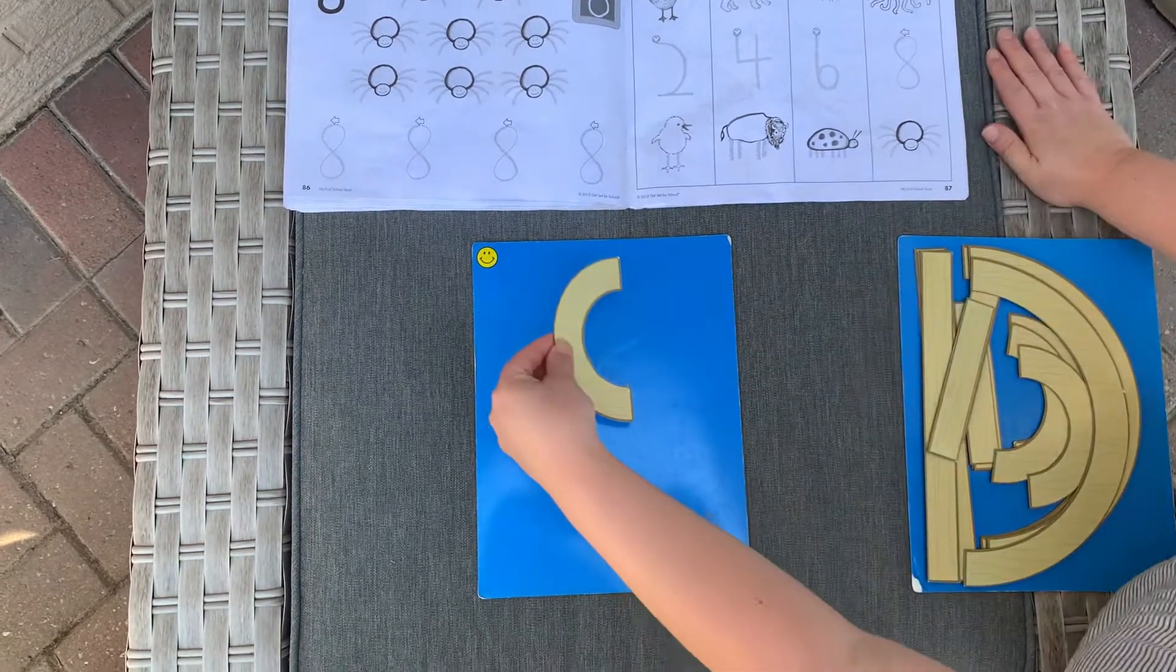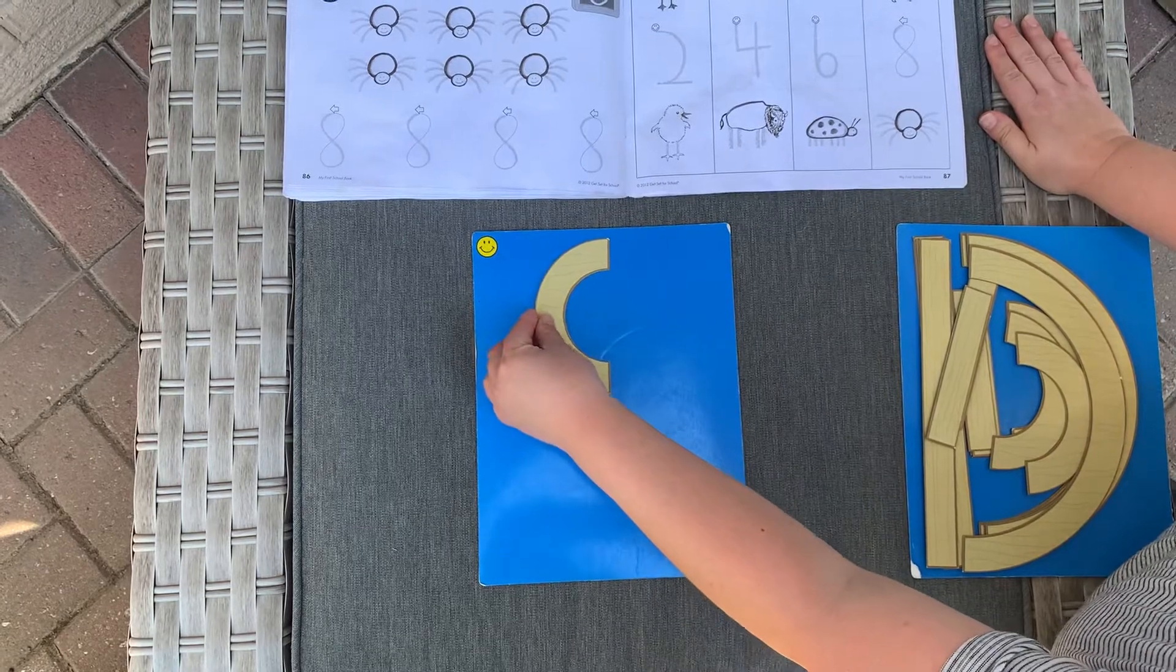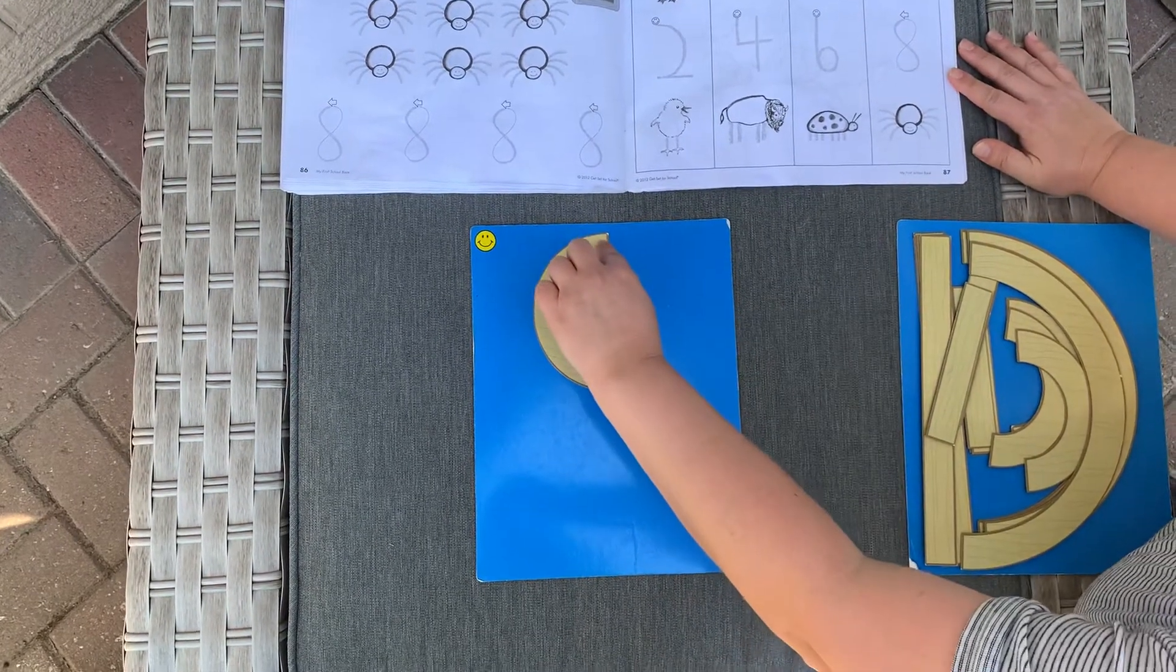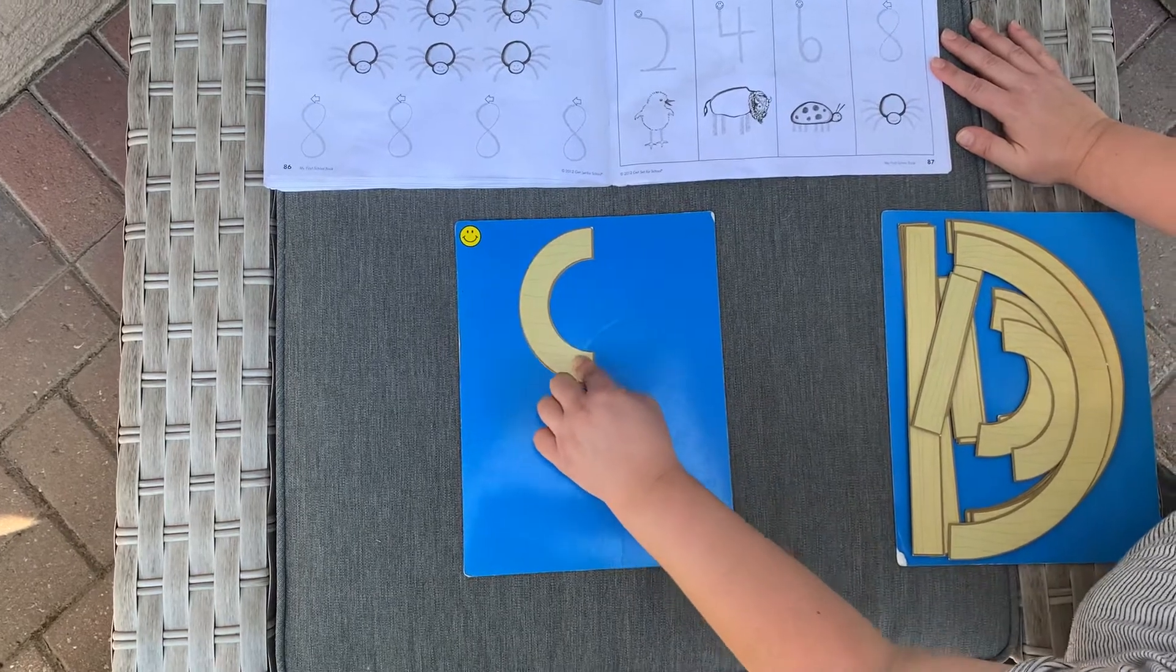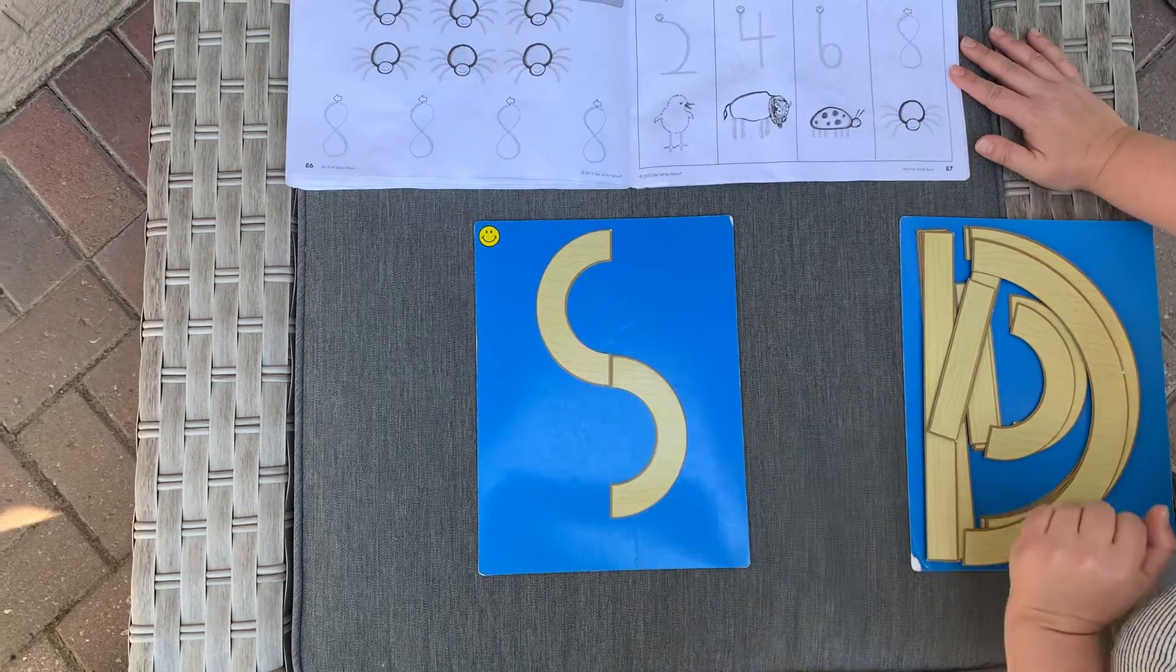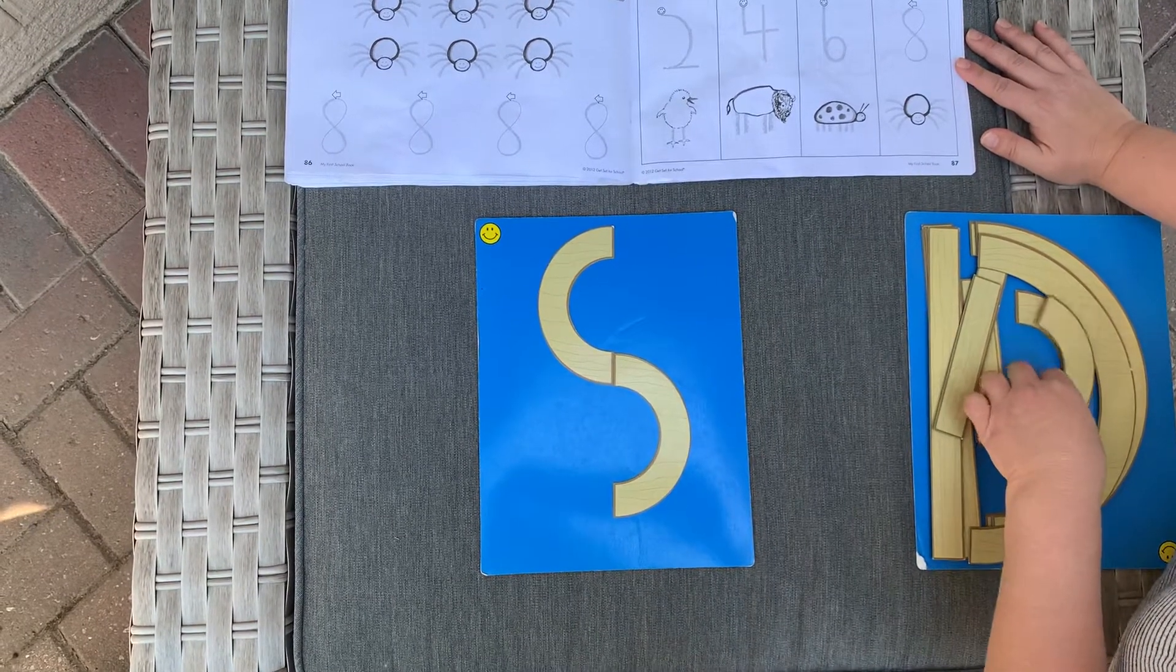Do you remember when we made our letter S? We started in the middle. Remember when we had our chalkboards, we had the little black dot. We make a little magic C curve one way and then we turn it around the other way. If we stop, we've made the letter S.